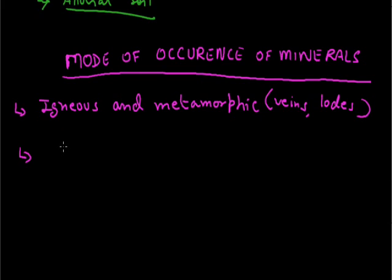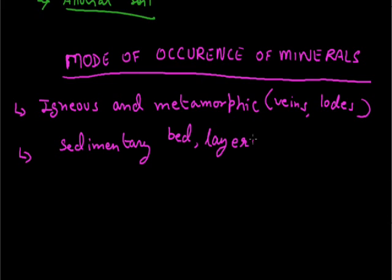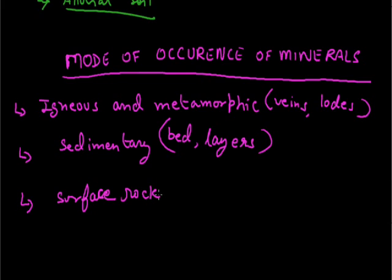The second type of rock is sedimentary rocks. These sedimentary rocks are made by sediments, and that's why we find a lot of layers in them. The minerals mainly occur in the beds, or layers, of these rocks. They have been formed as a result of deposition and accumulation in horizontal strata. The minerals found in sedimentary rocks are basically iron ore, gypsum, and potash. Minerals are also found on surface rocks through the removal of soluble constituents, leaving behind oxide deposits.